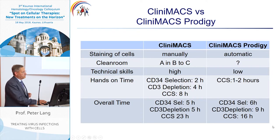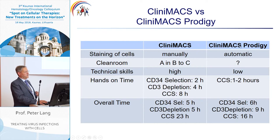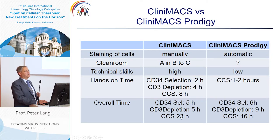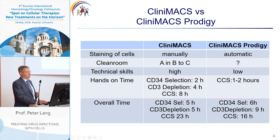Here is a comparison between the manual and automatic procedure. Technical skills needed are high for the manual process; for the Prodigy they are low. Hands-on time is eight hours manually versus one to two hours with the Prodigy. Overall time is 23 hours for the manual procedure and 16 hours for the automated procedure.